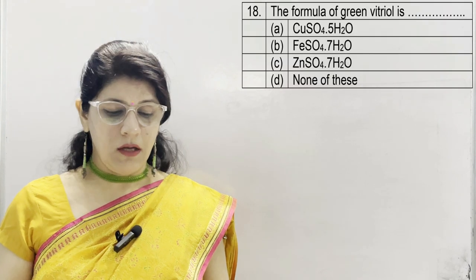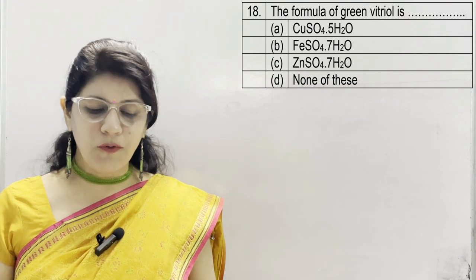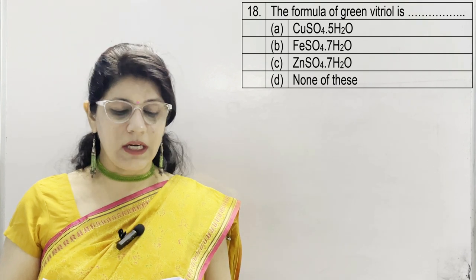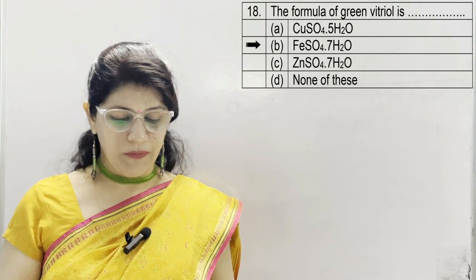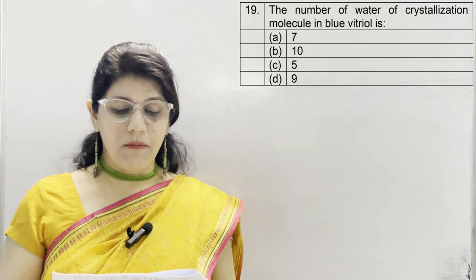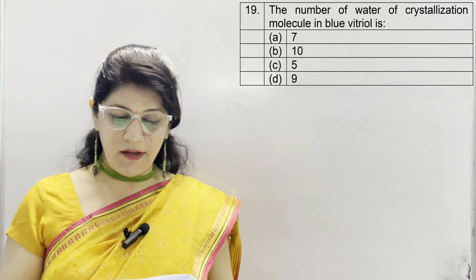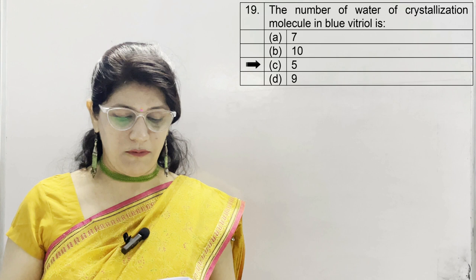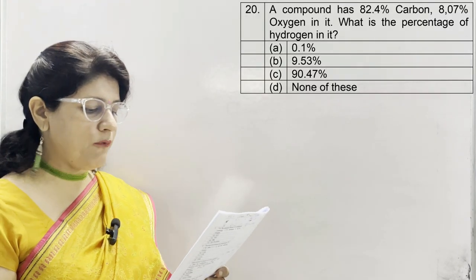In question 18, the formula of green vitriol is: A CuSO₄·5H₂O, B FeSO₄·7H₂O, C ZnSO₄·7H₂O, D none. Correct option is B, FeSO₄·7H₂O — known as green vitriol; blue vitriol is CuSO₄·5H₂O. Question 19: the number of water of crystallization molecules in blue vitriol is A 7, B 10, C 5, D 9. Correct answer is C, which is 5.